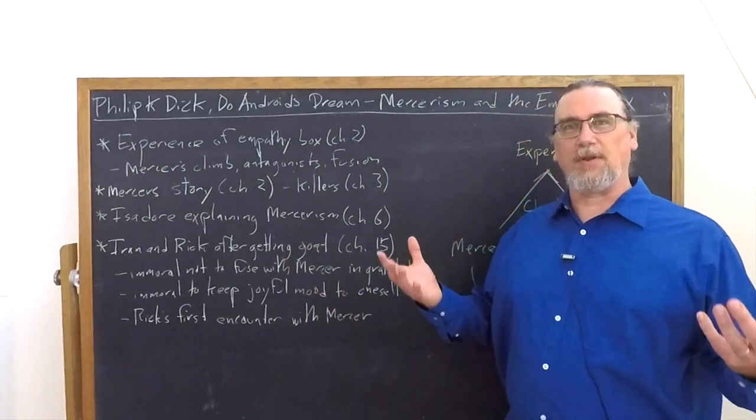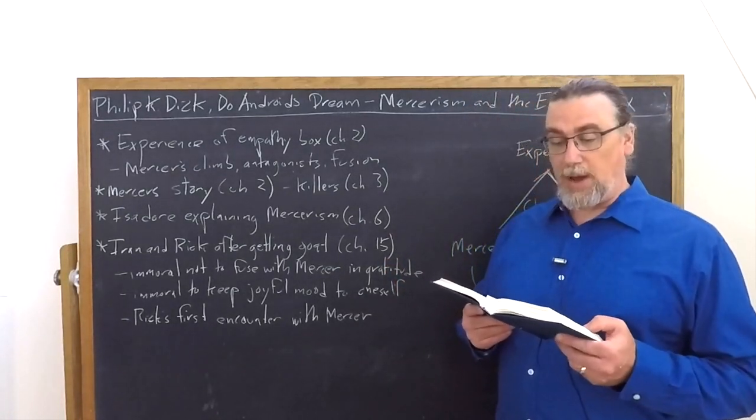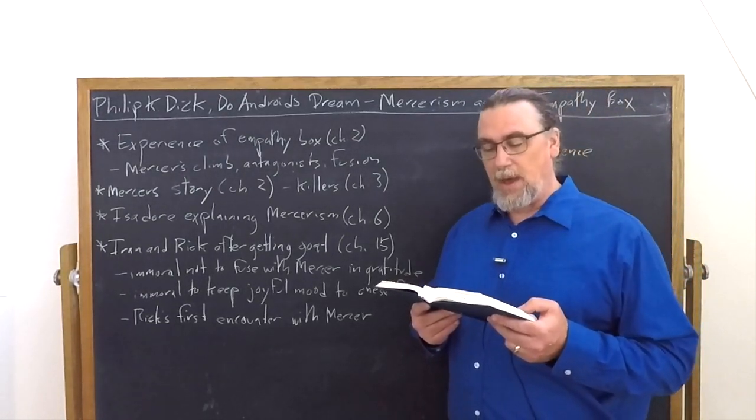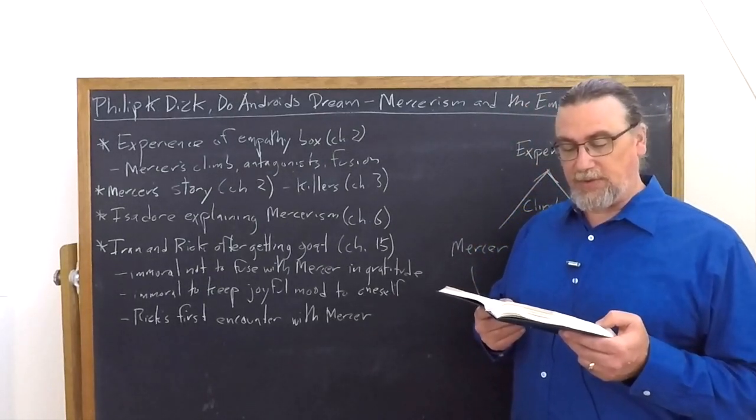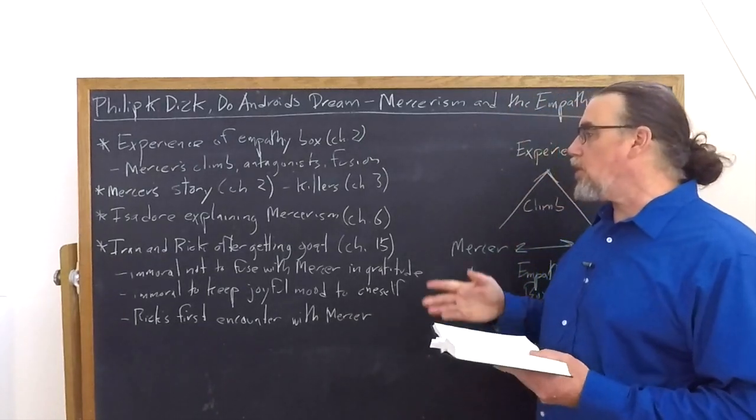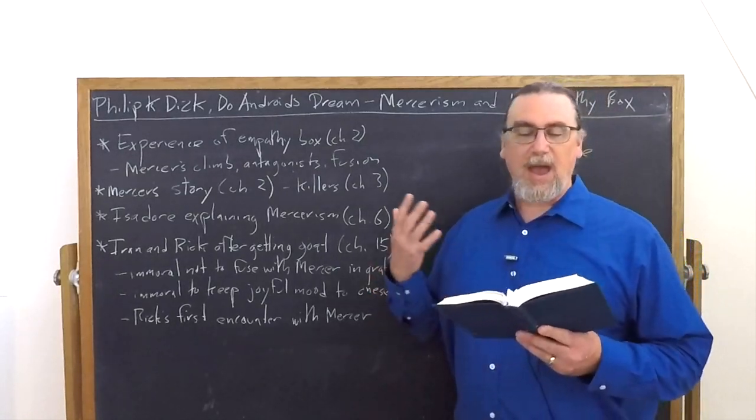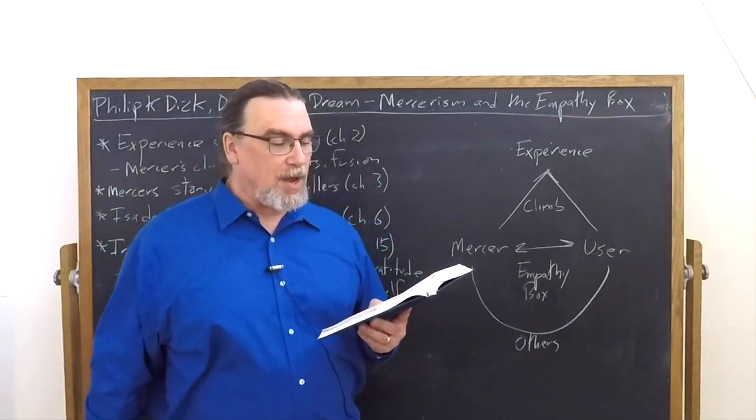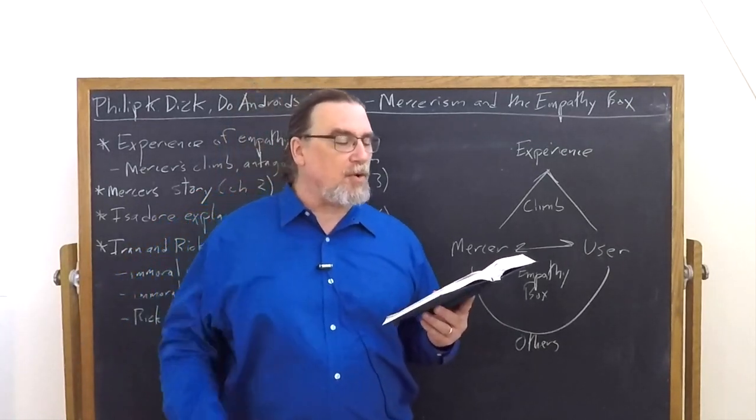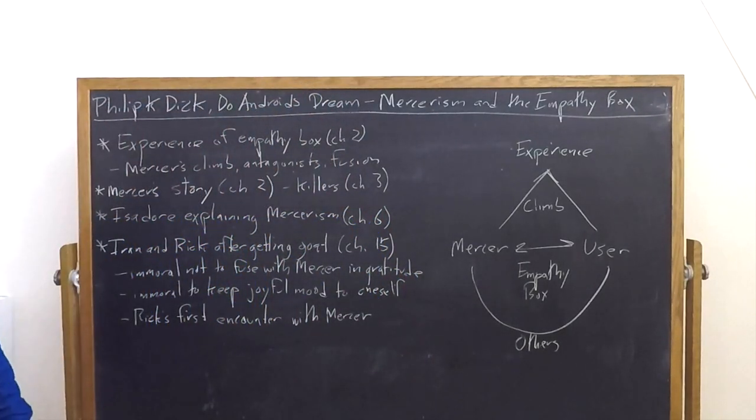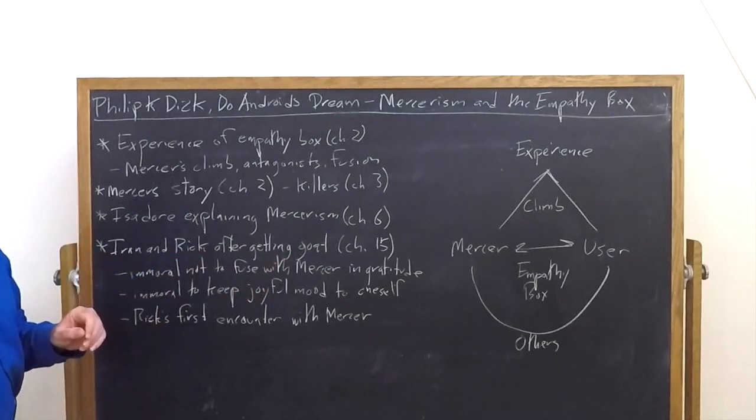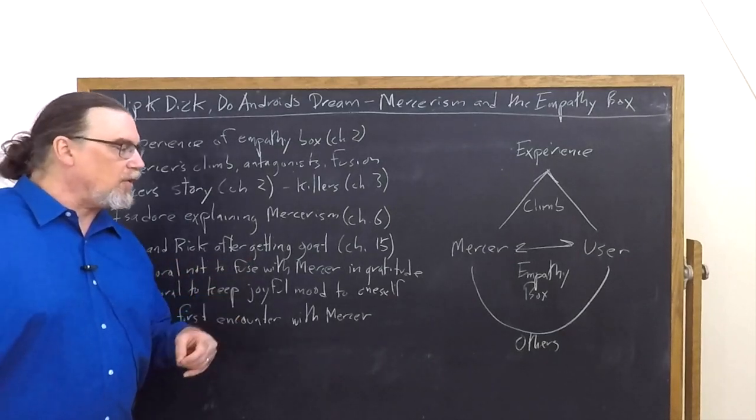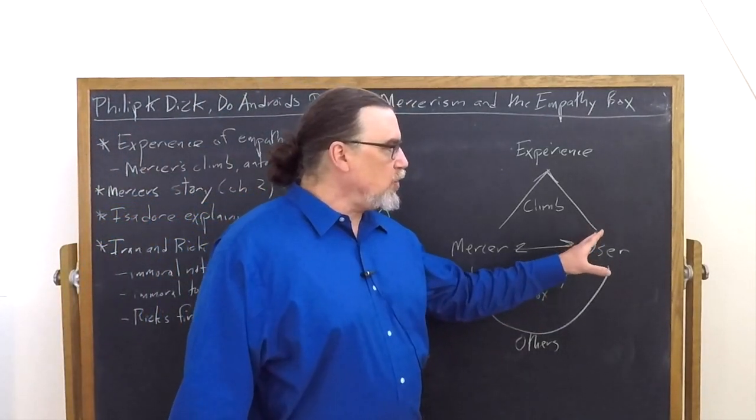There's a very important set of passages in chapter 15 after Rick brings home the goat. Iran says, 'Really, we ought to go downstairs. Let's run downstairs and give thanks to Mercer.' And why is this important? Because it would be immoral not to fuse with Mercer in gratitude, she says. 'I had a hold of the handles of the box today and it overcame my depression a little.' She shows him a bruise where she had gotten hit by a rock. 'Get in, Rick. This will just be for a minute. You hardly ever undergo fusion.' And here's where it comes in with another interesting thing: It's not just immoral not to fuse with Mercer in gratitude—she brings up the word immoral again.